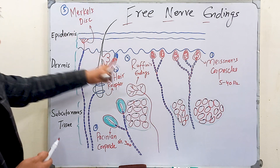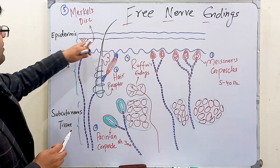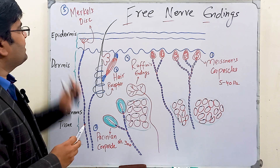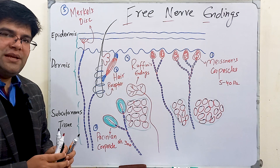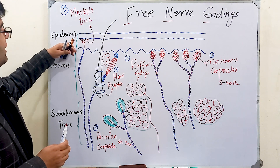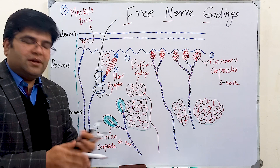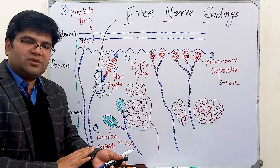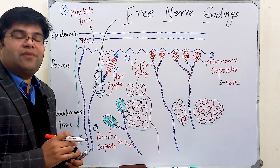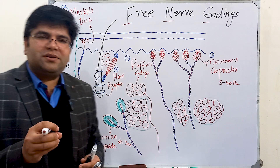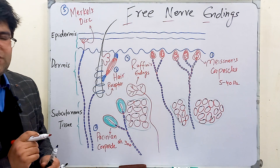Merkel's discs, just like Ruffini endings, are slowly adapting receptors. They are present in the epidermis and they detect fine touch, fine pressure, and the texture of various substances. We have also discussed free nerve endings, which are important to detect temperature, pain, crude touch, crude pressure, tickle, and itch sensations.